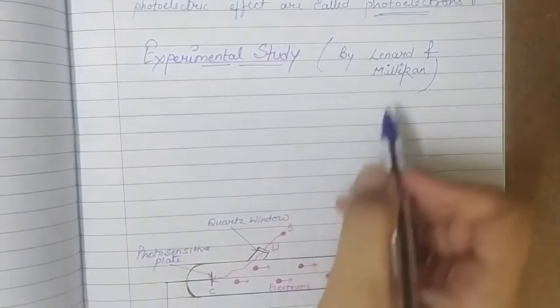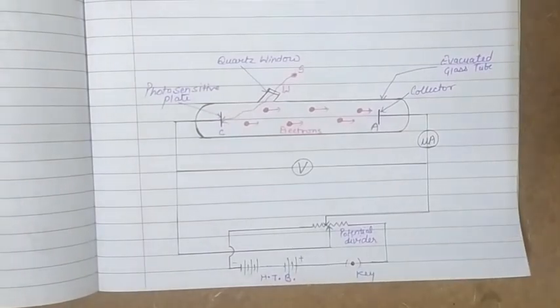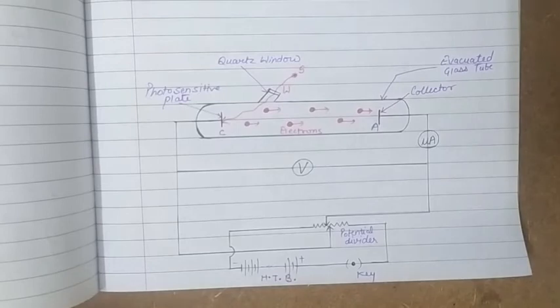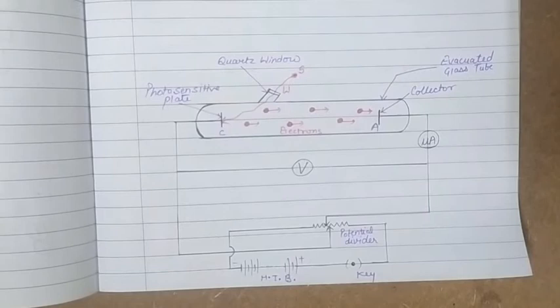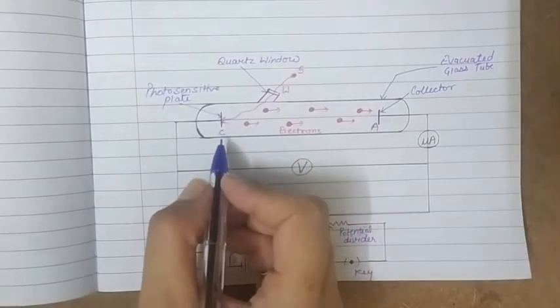We are now moving to the experimental study of the photoelectric effect. This experimental study was done by Leonard and Millikan. They made an arrangement as shown here in the diagram. The arrangement consists of an evacuated glass or quartz chamber or tube.